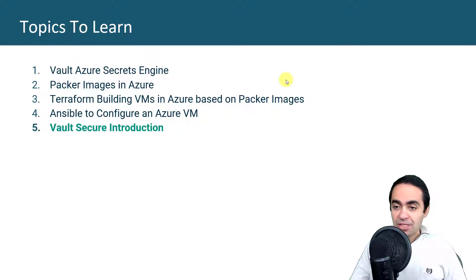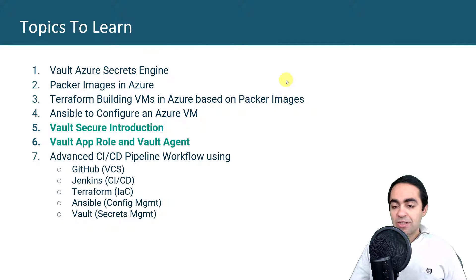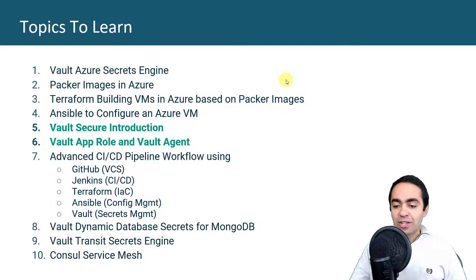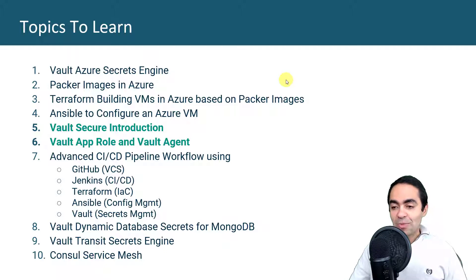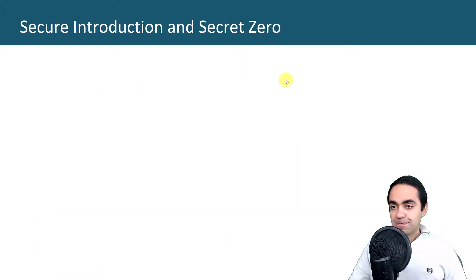The topics to learn: items one through four were discussed in the previous two videos. Items five and six are what we'll cover today, and seven through ten in the next video. For today: Vault secure introduction, Vault AppRole — what that's all about — and the Vault agent and how that helps us with our application.